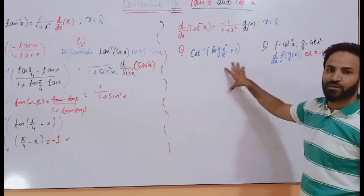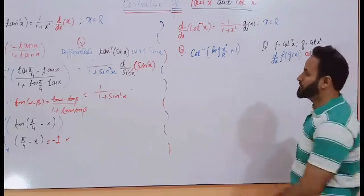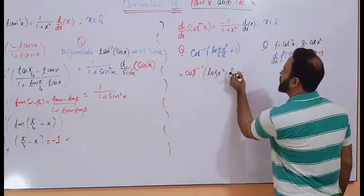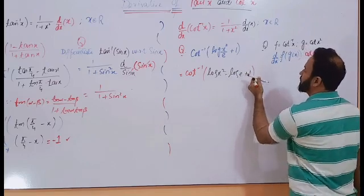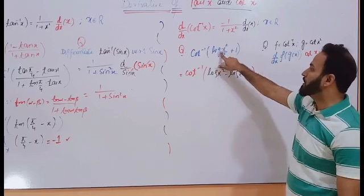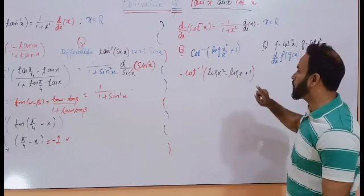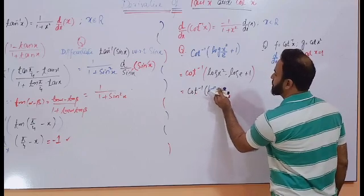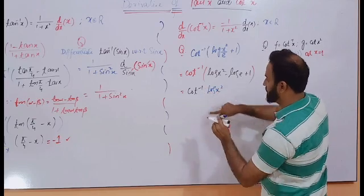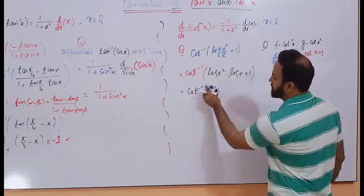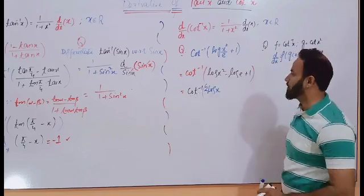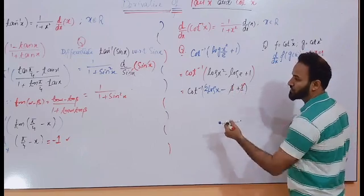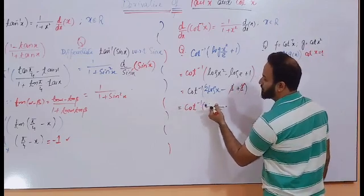These two questions have appeared in different entrance exams. I try to solve this question. Cot inverse of log x squared minus log e plus 1. I use the definition of the logarithm: log x squared minus log e. What is log e? That is 1. So cot inverse of log x squared, and I can use the property of log — this square will come in front of the log according to the log property — and minus log e is 1, this plus 1. These will cancel each other and the remaining term will be cot inverse of 2 log x.